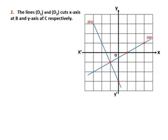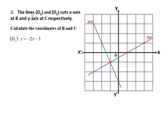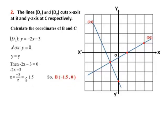Number 2: the lines D1 and D2 cut the x-axis at B and the y-axis at C respectively. To calculate the coordinates of the intersecting point between any two straight lines, we must solve a system of equations. Here we solve the system between D1 and the x-axis to calculate B. By comparison, y equal y, so minus 2x minus 3 equals 0. Solving this, we get x equal minus 3 over 2, or minus 1.5. So B equals (−1.5, 0).